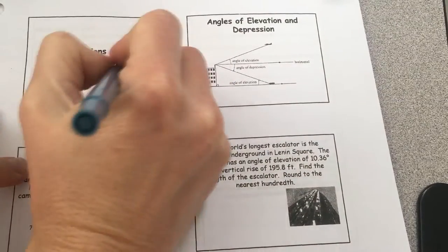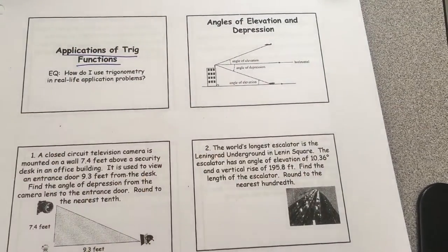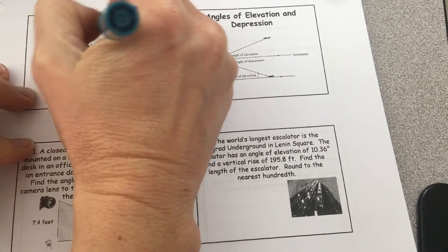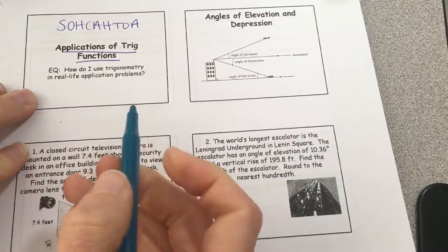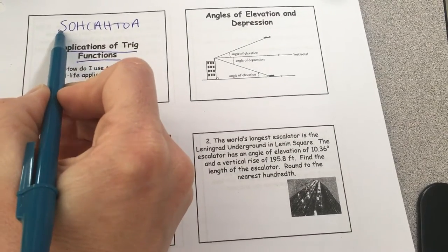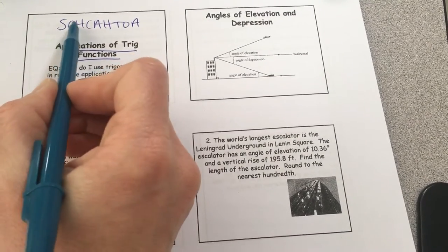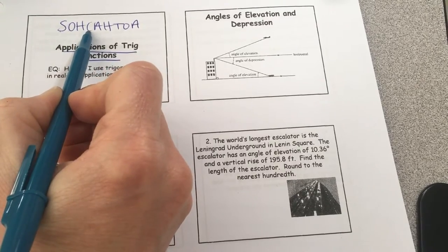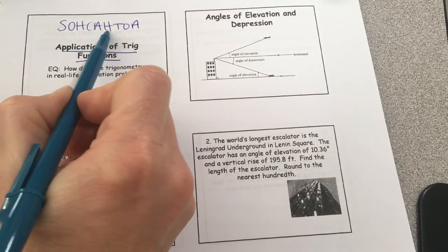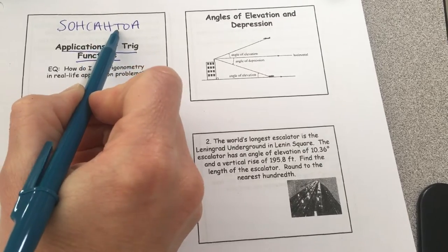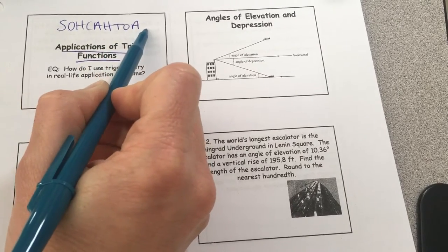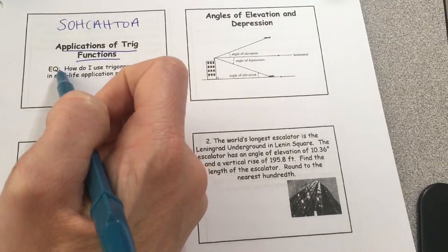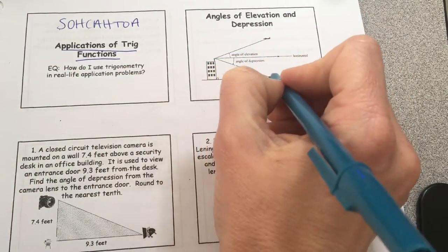Today we're doing more word problems with trig. We're going to be using SOHCAHTOA. The S stands for sine — sine is always opposite over hypotenuse, that's how you set up your fraction. Cosine is adjacent over hypotenuse, and tangent is opposite over adjacent.